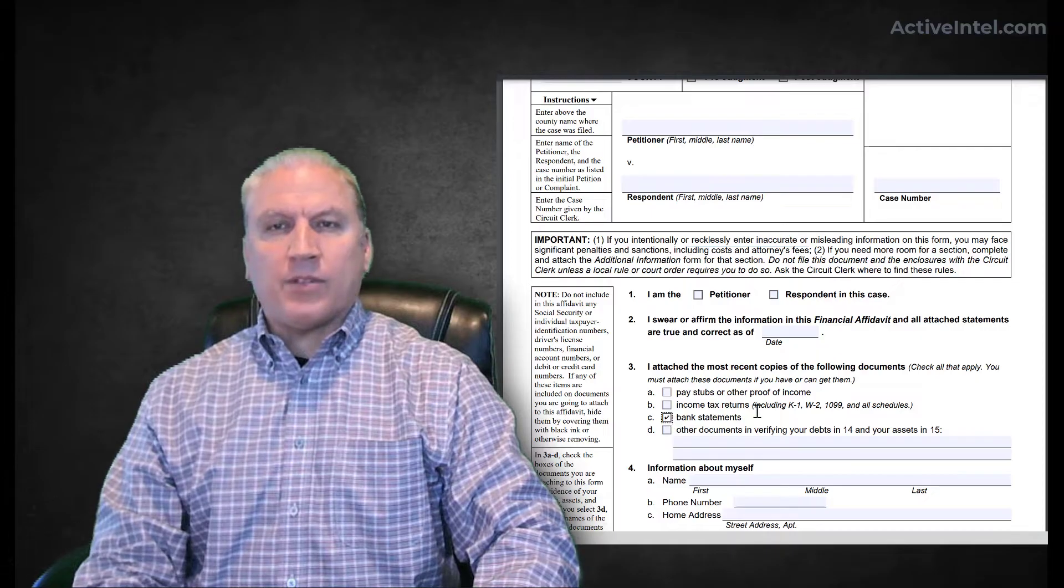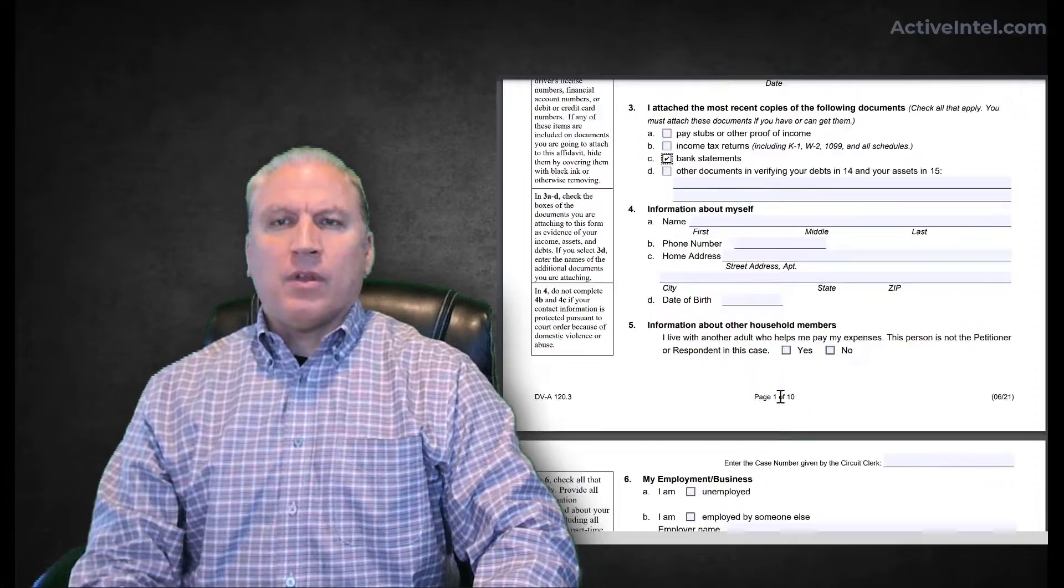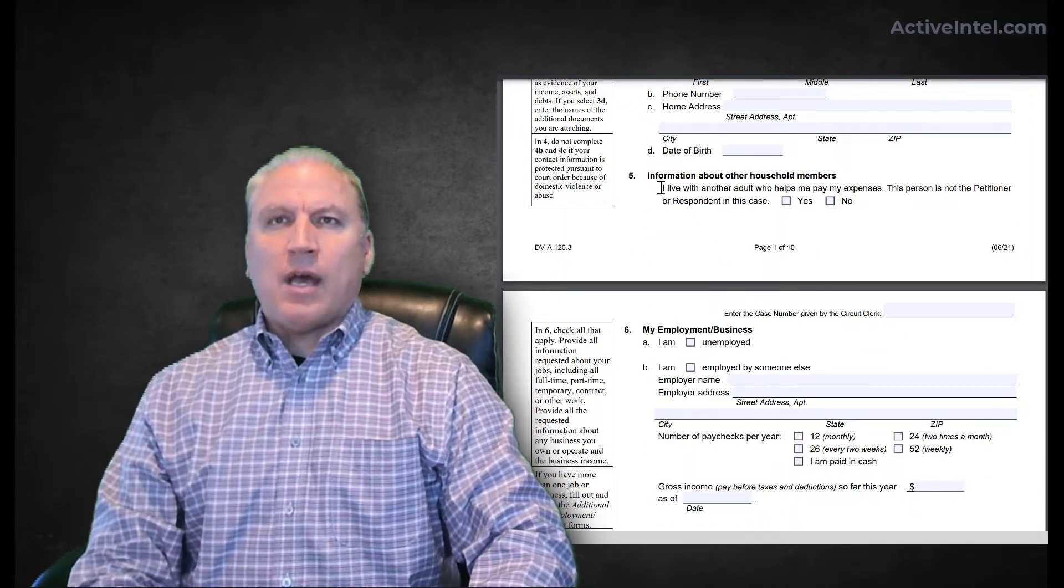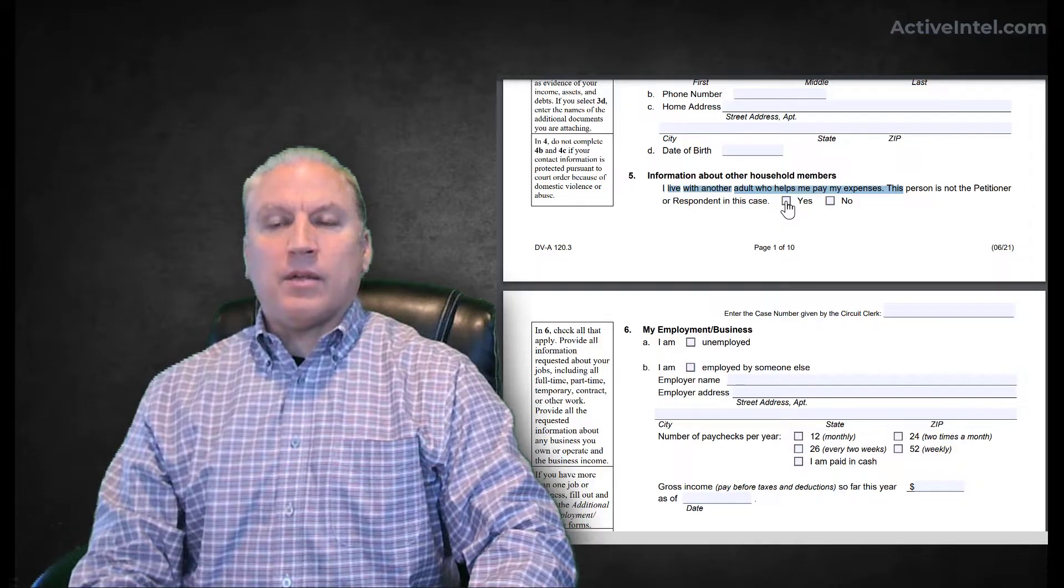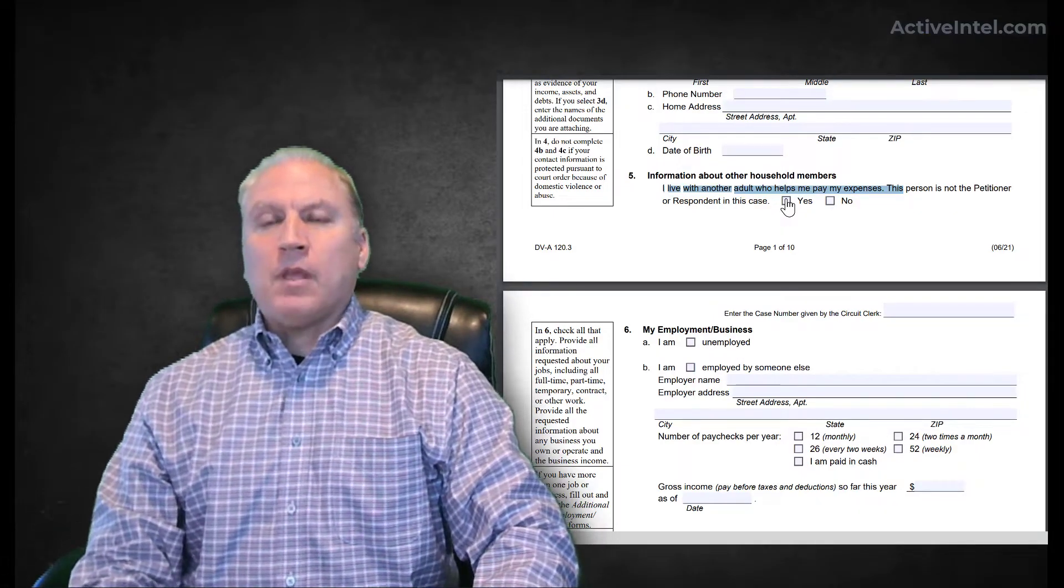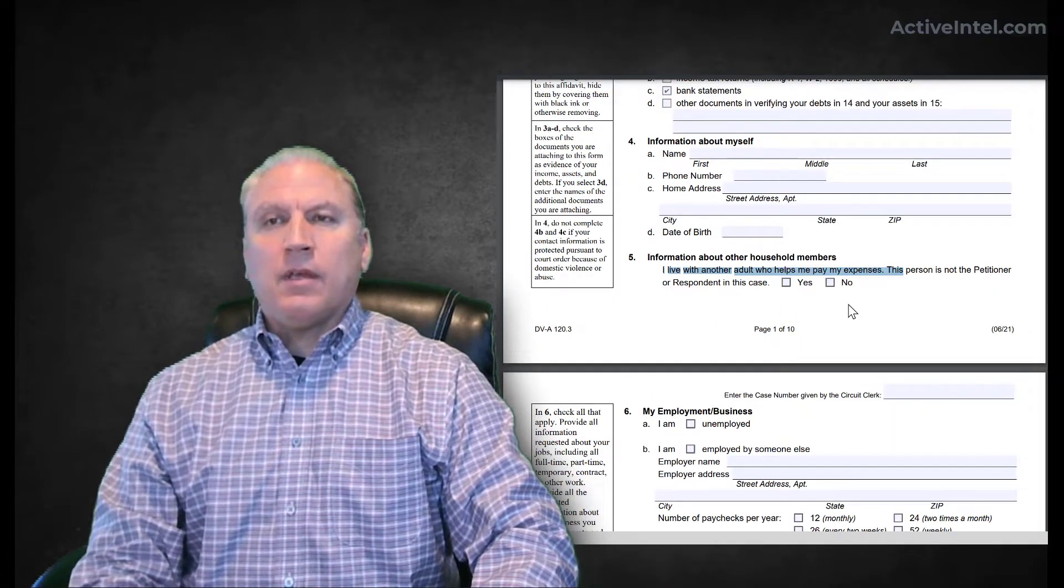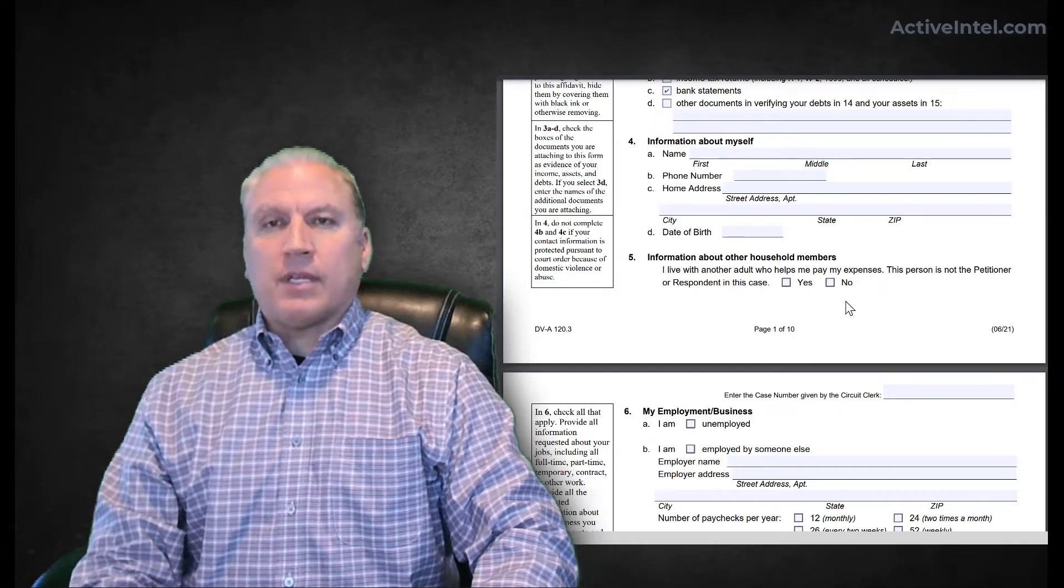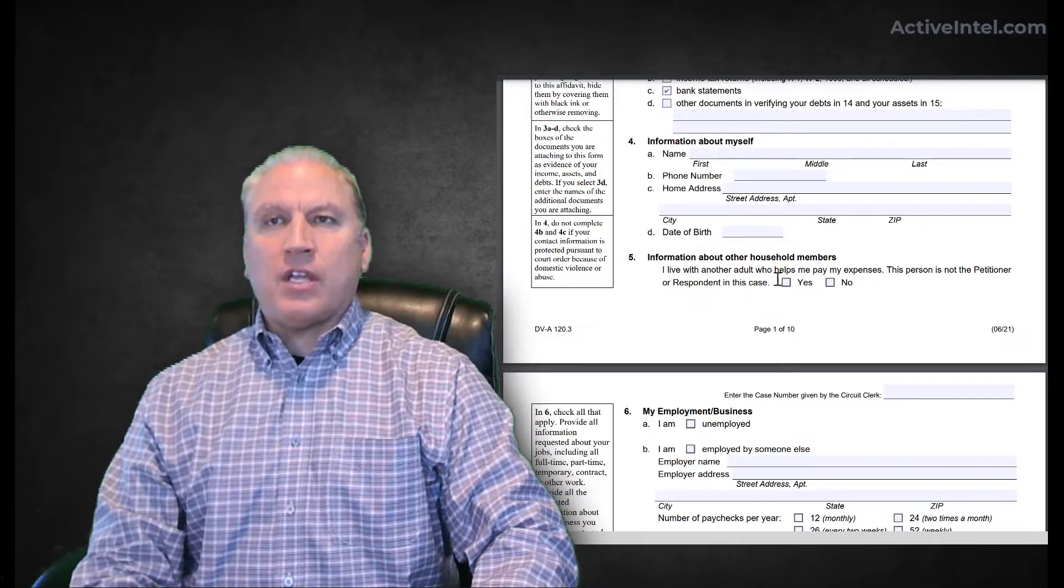You have to attach most recent copies of documents: pay stubs, income tax returns, bank statements. You can see right here—important thing—bank statements. Then other documents: your name, address, date of birth, other people who may contribute to your household. If someone lives with another adult who helps pay expenses, the court will take that into account. A lot of times people will overlook this and leave it out because they don't want to be penalized because they live with somebody. That's something you want to verify.